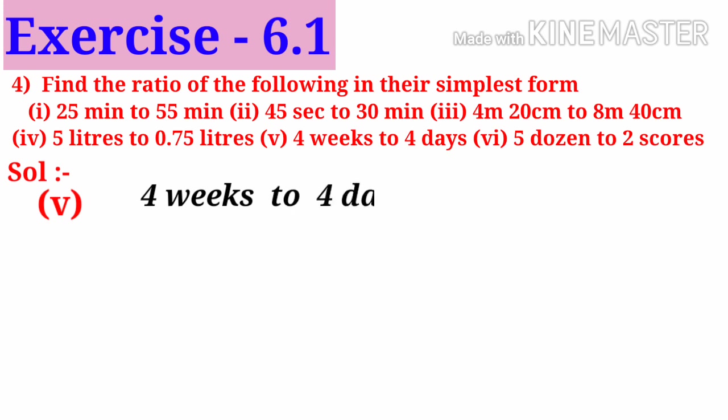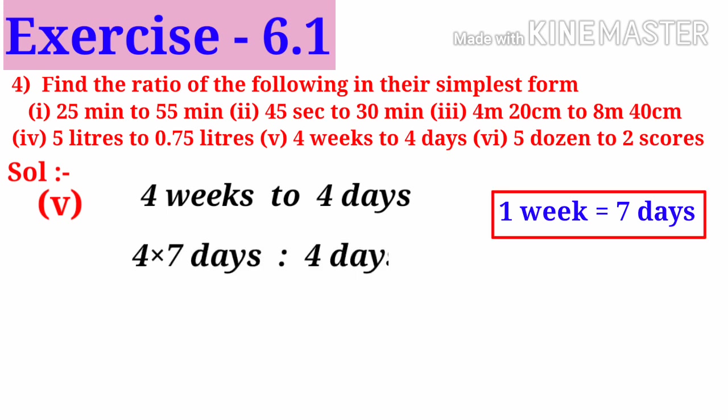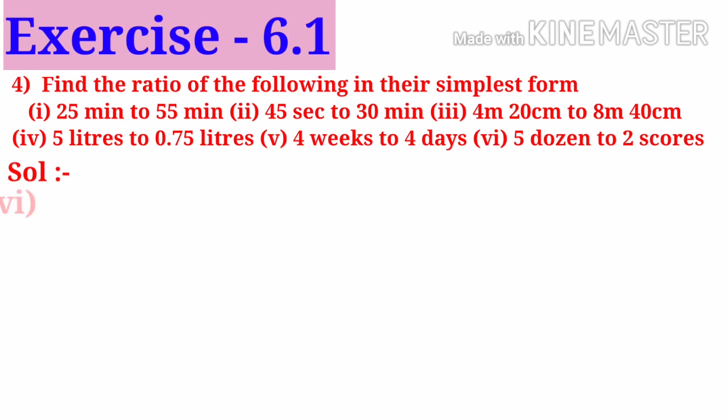Number 5: 4 weeks to 4 days. Here observe that weeks and days are different quantities. Let us convert into same quantity. We know that 1 week is 7 days. So 4 weeks equals 4 into 7 days, which is 28 days to 4 days. On simplification by 4, we get 7 to 1. The ratio is 7 is to 1.